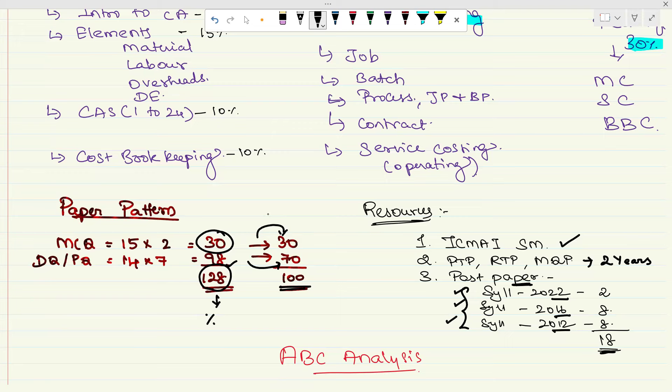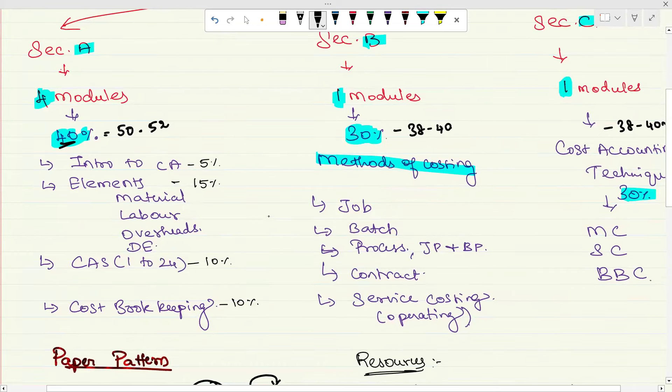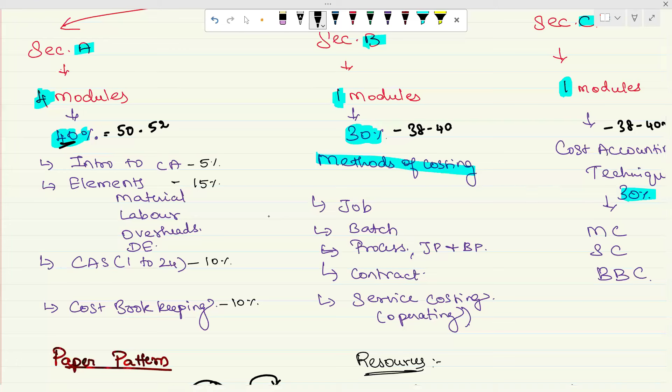When it comes to percentage calculation, from section A I'm going to ask 50 percent, from section B and C put together I'm going to ask another 60 percent. It is almost 60-40 criteria. They are having chapters listed down like intro to cost accounting, elements of cost with four sub-topics: material, labor, overheads, and direct expenses, cost accounting standards from 1 to 24, and cost bookkeeping.